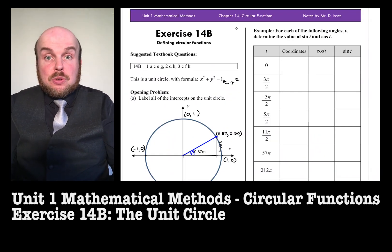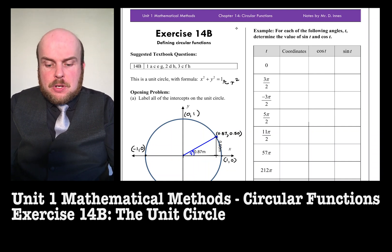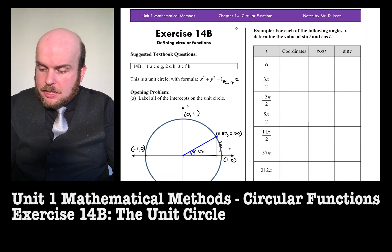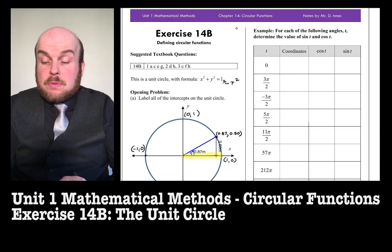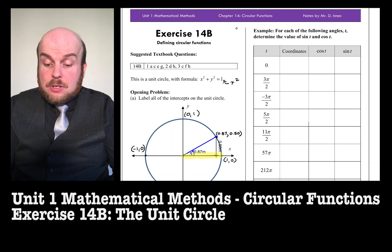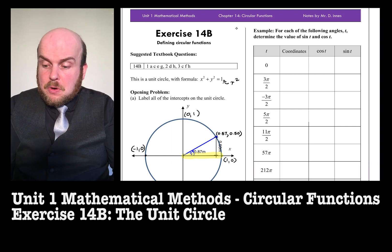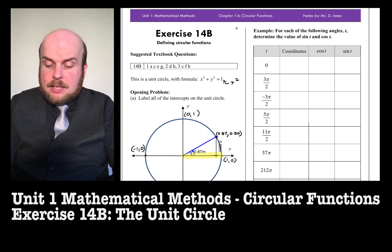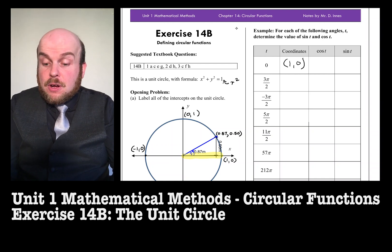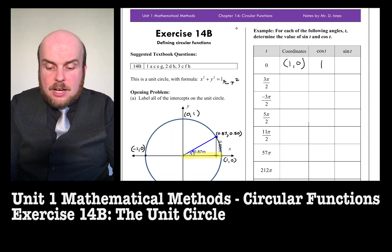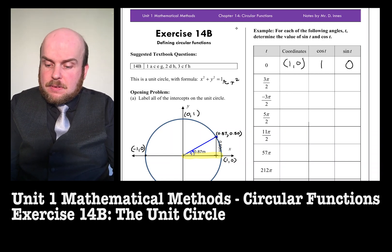When our angle is at 0, which, remember, we start on this line here, so when we start from that line, 0, the coordinates of when the line hits the, or where the circle hits the axis, well, that's going to be at 1, 0. So therefore, the cos of 0 must be 1, and sine of 0 must be 0.